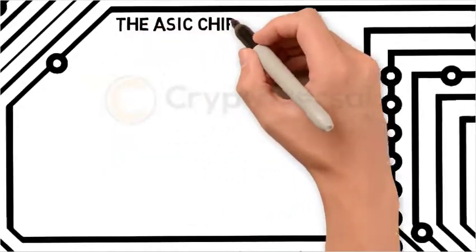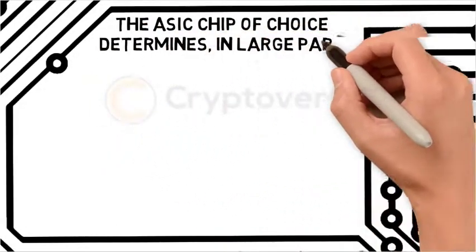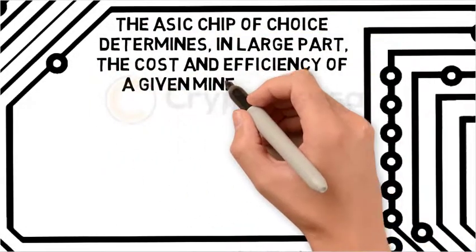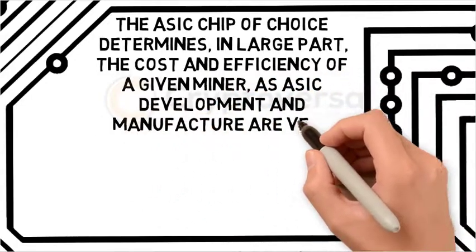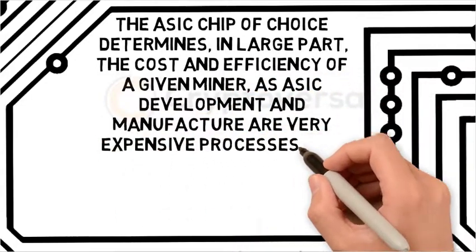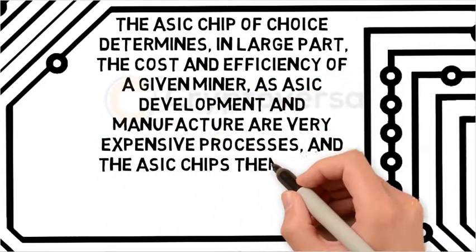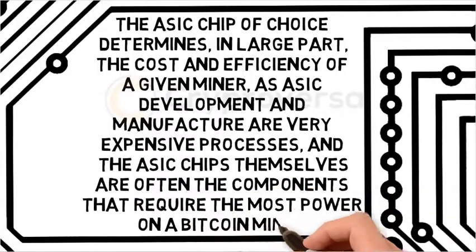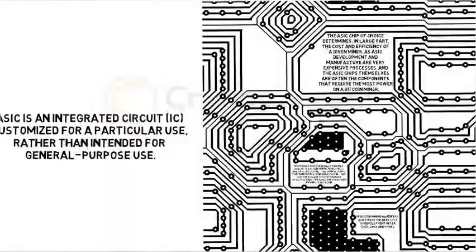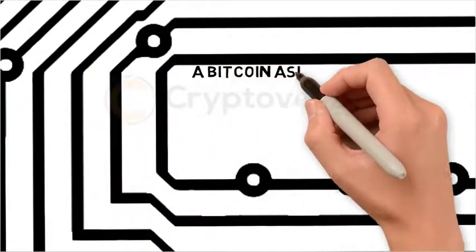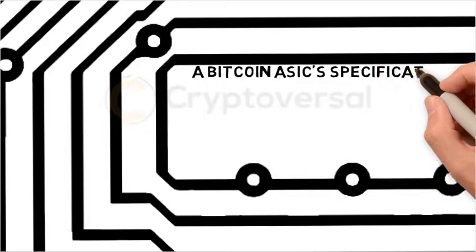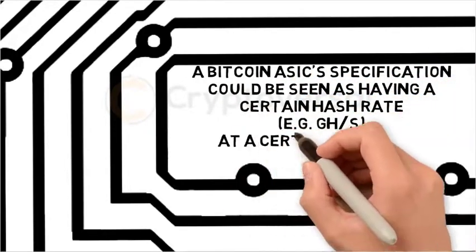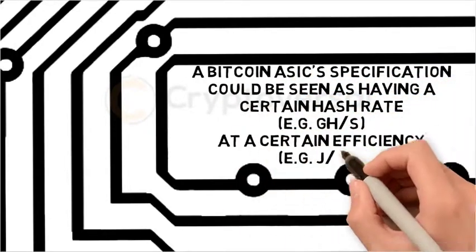The ASIC chip of choice determines in large part the cost and efficiency of a given miner. As ASIC development and manufacture are very expensive processes, and the ASIC chips themselves are often the components that require the most power on a Bitcoin miner, a Bitcoin ASIC's specification could be seen as having a certain hash rate at a certain efficiency.